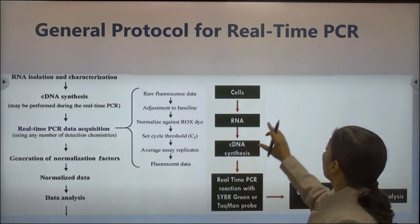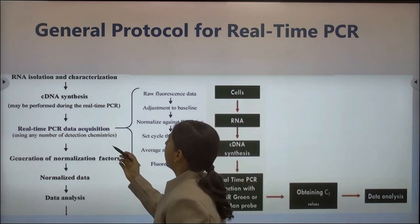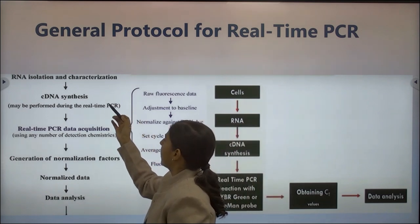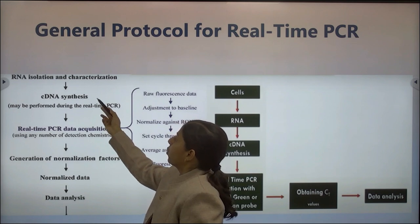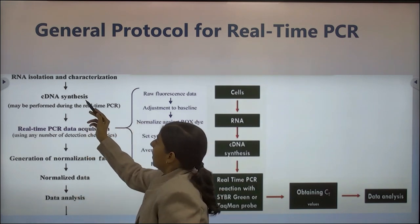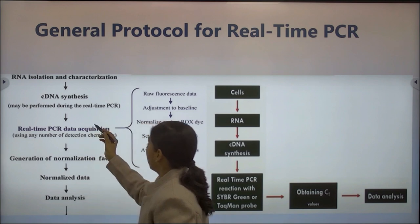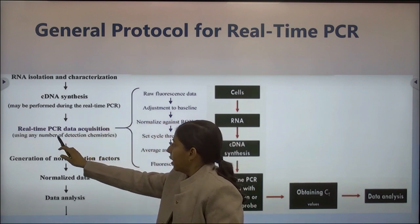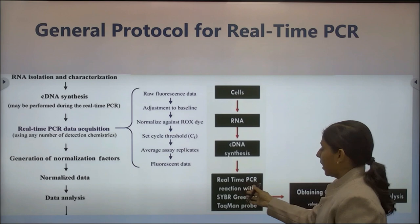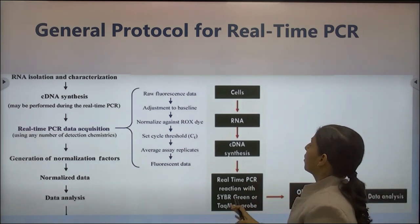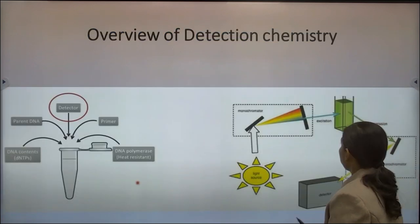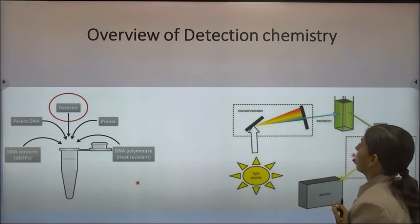The general protocol for real-time PCR: first, we isolate RNA and check its integrity, quality, and quantity. Since RNA is unstable, we make cDNA from it — cDNA is relatively stable. cDNA is made from RNA through reverse transcriptase enzyme. Then real-time data acquisition takes place: from cells, RNA is isolated, cDNA is made, and real-time PCR is performed using SYBR Green and TaqMan probe dyes, leading to CT determination, followed by data analysis.